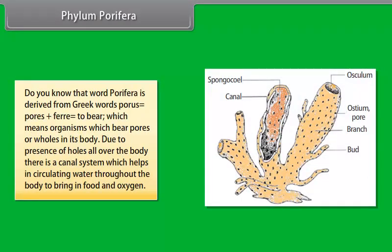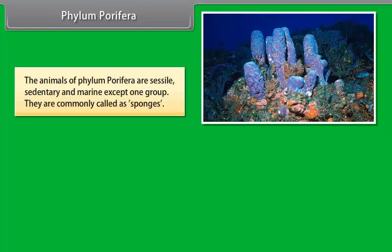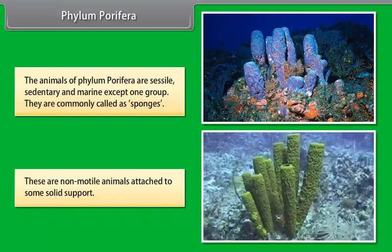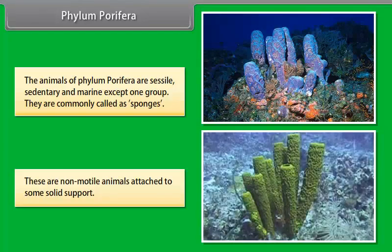Phylum Porifera. The word Porifera is derived from Greek words 'porous' meaning pores, plus 'ferre' meaning to bear, which means organisms which bear pores or holes in their body. Due to the presence of holes all over the body, there is a canal system which helps in circulating water throughout the body to bring in food and oxygen. The animals of Phylum Porifera are sessile, sedentary, and marine except one group. They are commonly called sponges and are non-motile animals attached to some solid support.